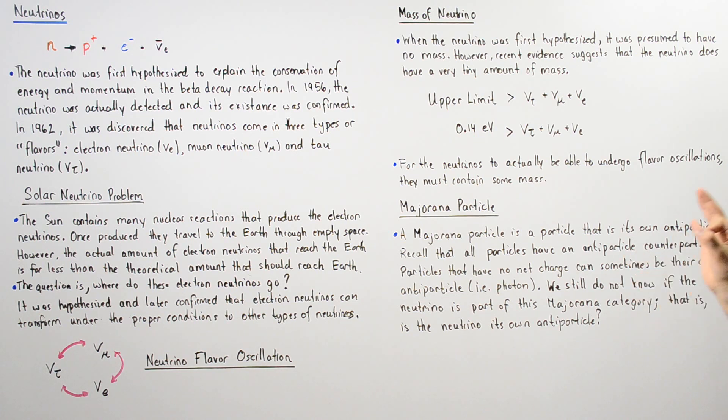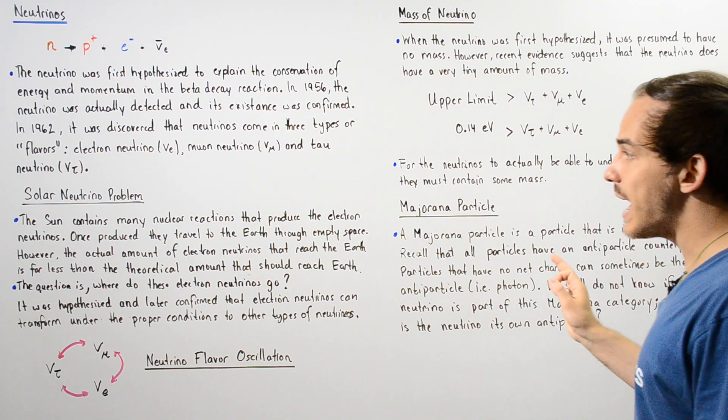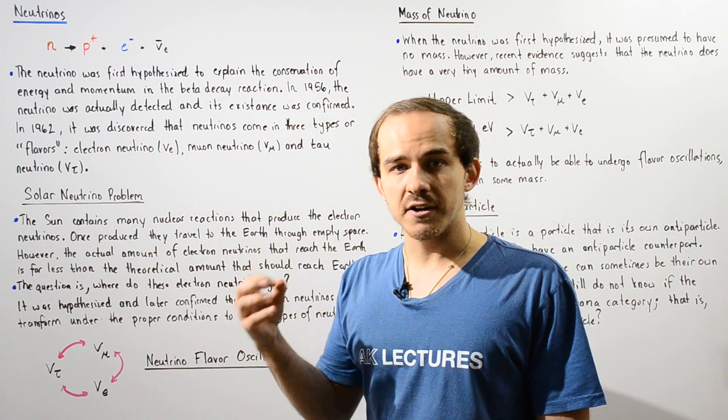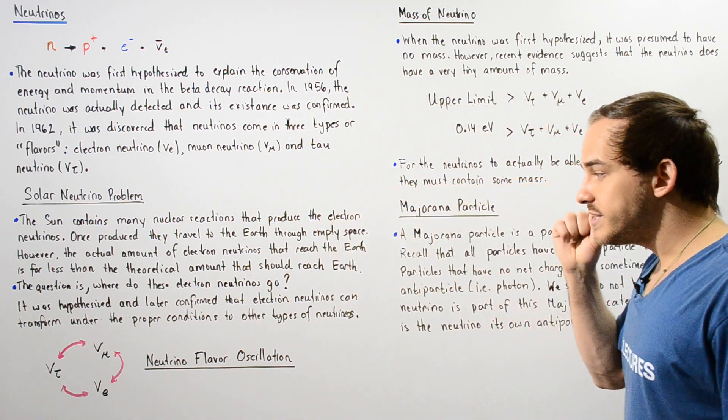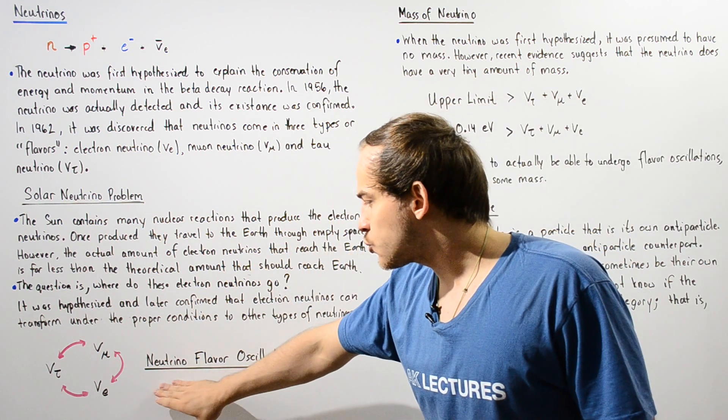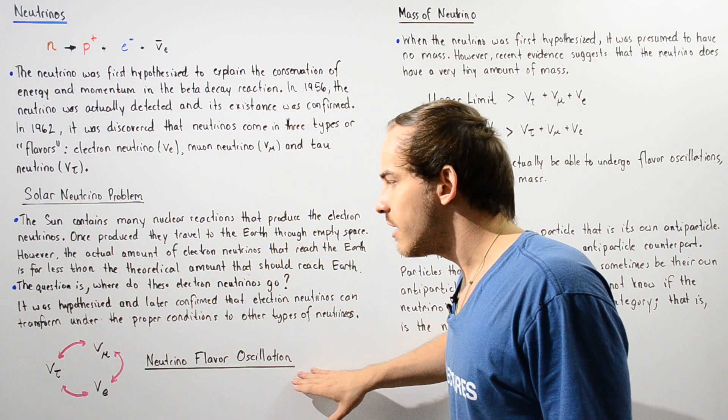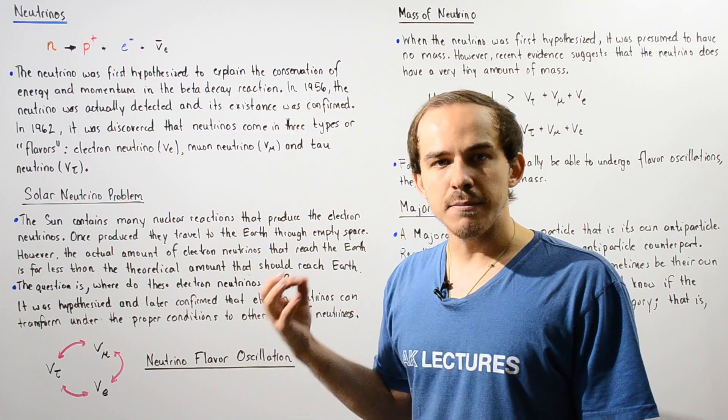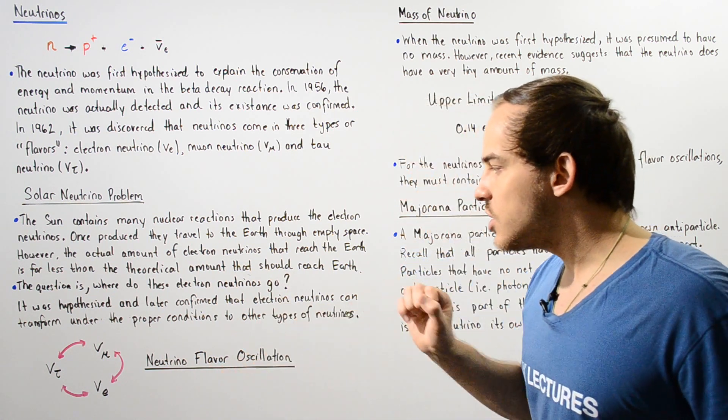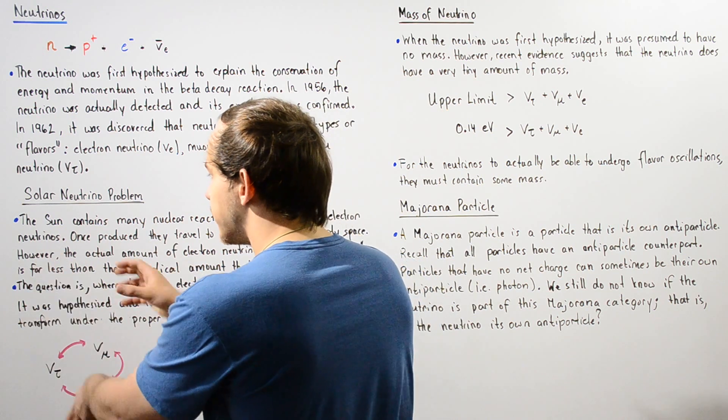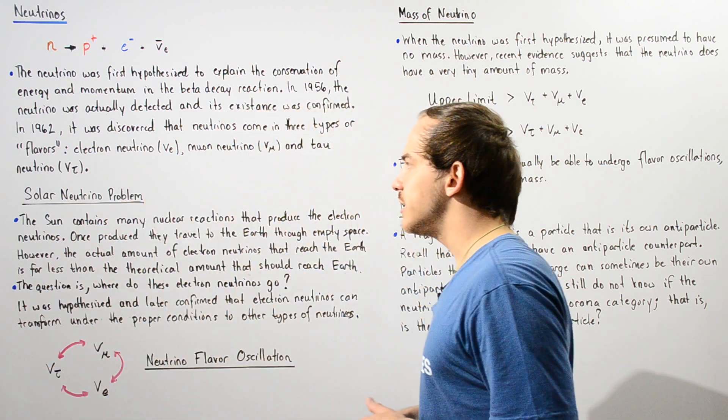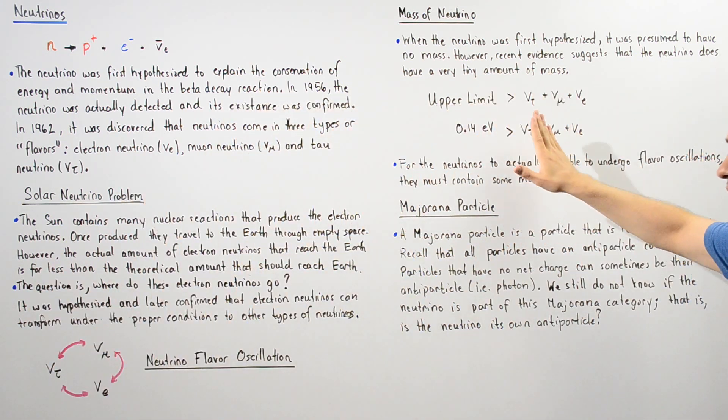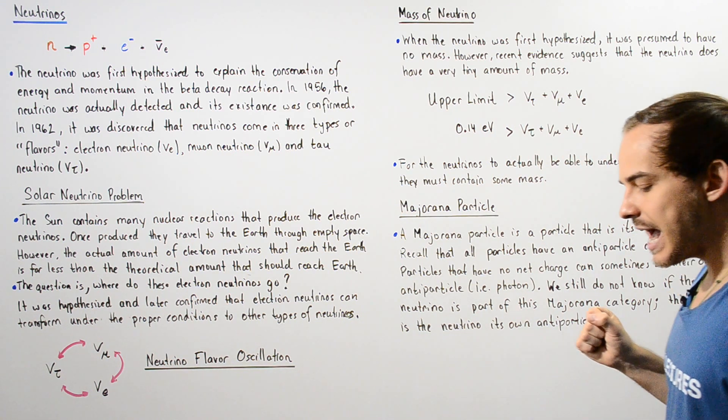So we see that if the neutrino does in fact have a mass, it's very small. Now, we see that for the neutrino flavor hypothesis to actually be correct, for the neutrinos to be able to oscillate back and forth between the different flavors, the neutrino must have a mass.